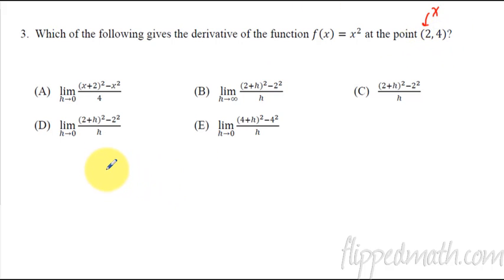When we write out the definition of the derivative, which is the limit as h approaches zero, all over h, we're going to have f(x+h). So that's x², so we're going to have (x+h)² but instead of an x I'm going to put a two.